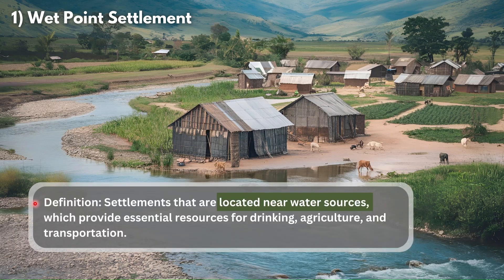What is the definition of a wet point settlement? These are settlements that are located near water sources, which provide essential resources for drinking, agriculture, and transportation. Because if you have a settlement, you are going to want to be near water that you can use for drinking, for farming, and sometimes also for transportation.